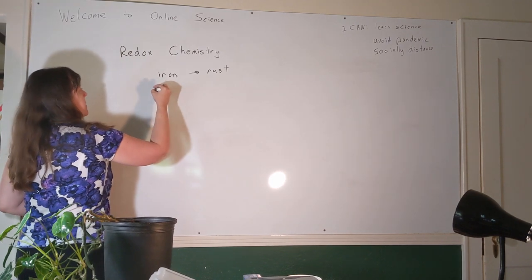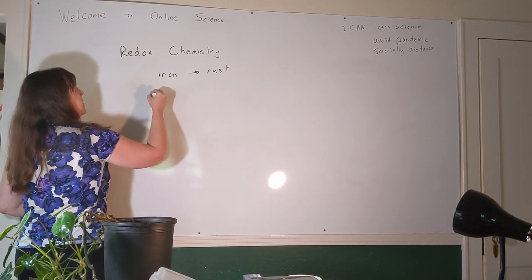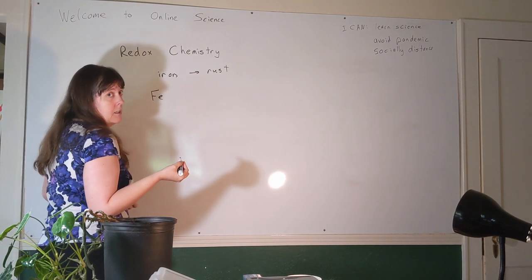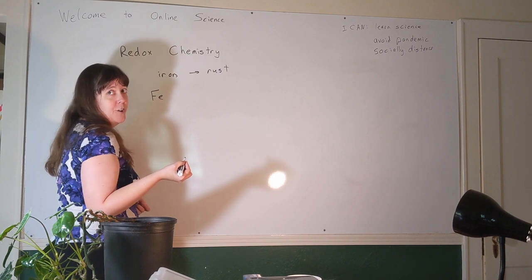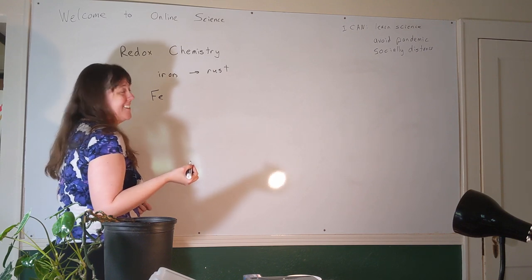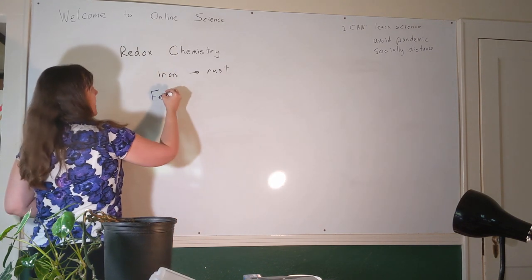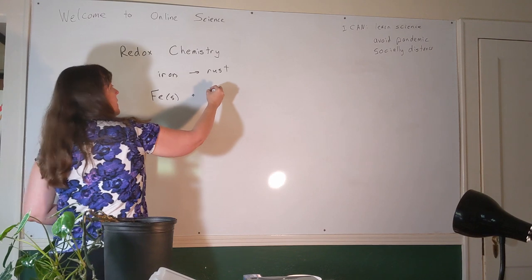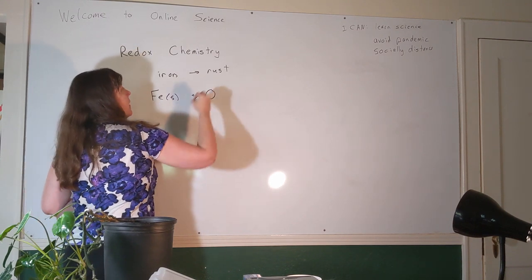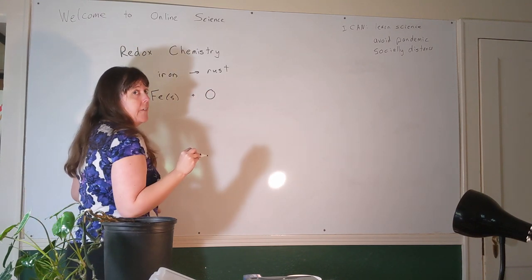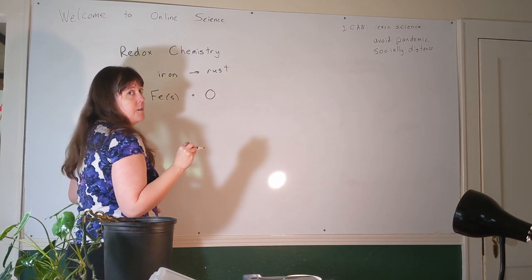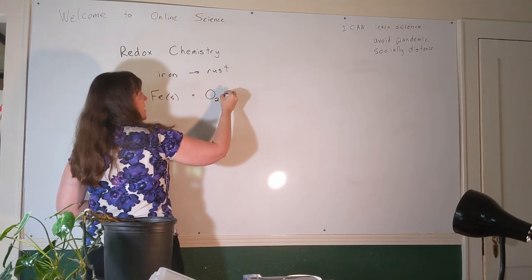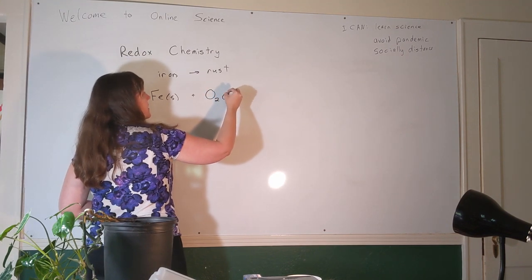The chemical reaction that takes place is that iron — whose symbol is Fe — which is a solid, reacts with oxygen in the air. What's oxygen's elemental form? We're going to pretend like you all said O₂, and it's a gas.